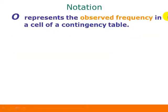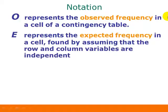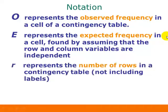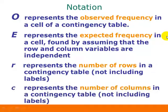The notation for this type of test looks like this. Capital O represents the observed frequency in a cell of the contingency table. E represents the expected frequency in a cell, found by assuming that the row and column variables are independent. R represents the number of rows in a contingency table, not including the labels or the totals. And C represents the number of columns in a contingency table, not including labels or totals.